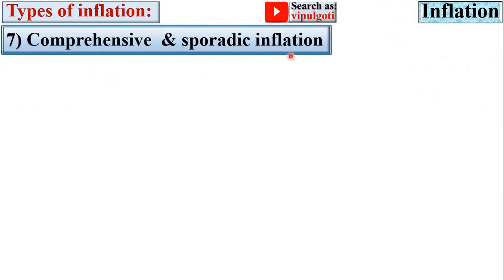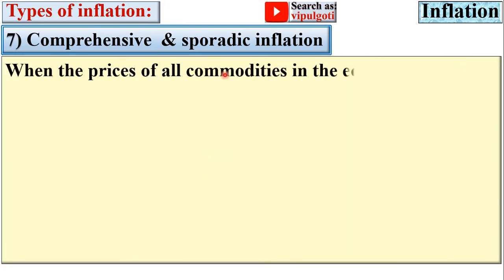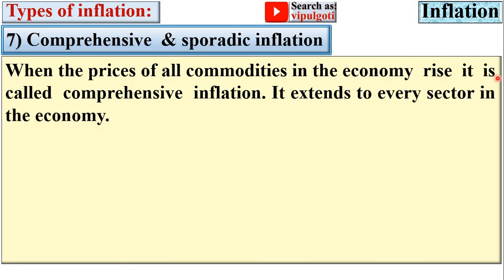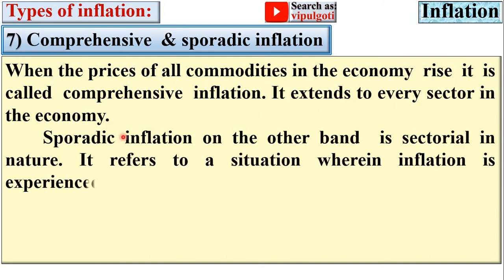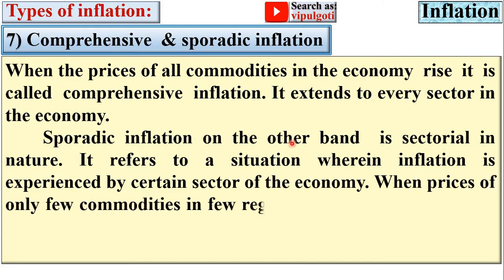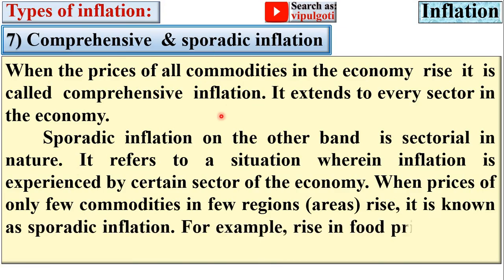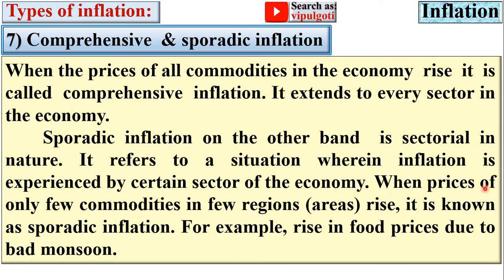Comprehensive inflation occurs when the prices of all commodities in the economy rise — it extends to every sector. Sporadic inflation, on the other hand, is sectoral in nature, affecting only a certain sector of the economy. When prices of only a few commodities in a few regions rise, it is known as sporadic inflation — for example, a rise in food prices due to bad monsoon.